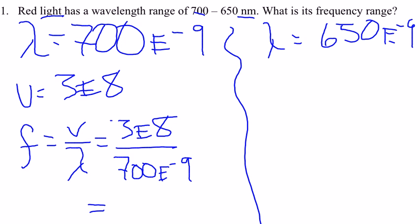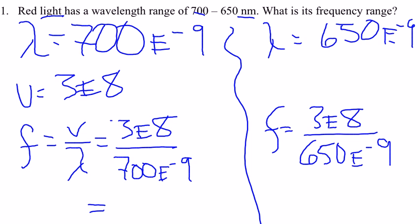Now, the other one will be the same setup. Frequency is going to be equal to 3 times 10 to the 8th, this time divided by 650 E negative 9. Plug that in and you'll get your answer as well.